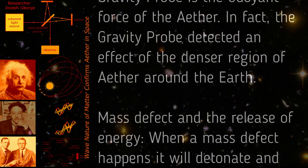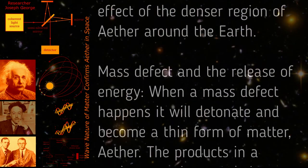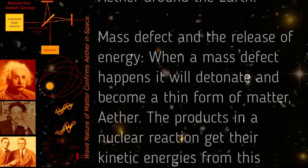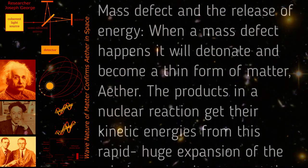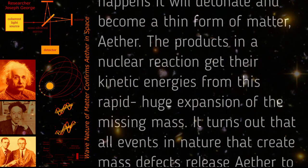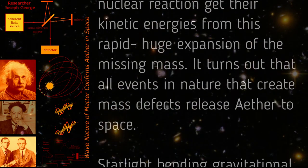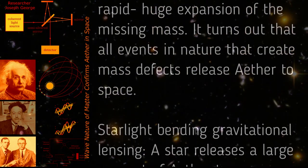Mass defect and the release of energy: When a mass defect happens it will detonate and become a thin form of matter, ether. The products in a nuclear reaction get their kinetic energies from this rapid huge expansion of the missing mass. It turns out that all events in nature that create mass defects release ether to space.